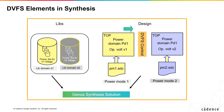Power mode 1 corresponds to power domain PD1 and operating voltage V1, and PM2 is associated with power domain PD1 and operating voltage V2. So, in your design, you have different library domains and different power modes for different voltages.